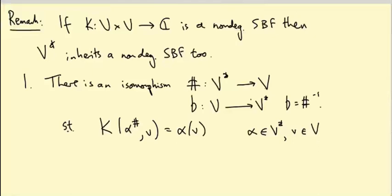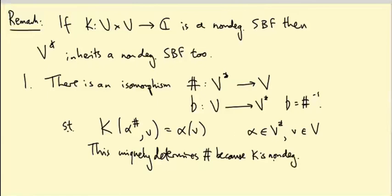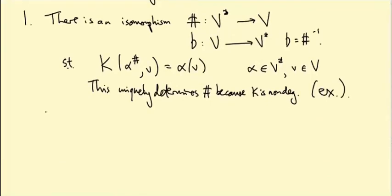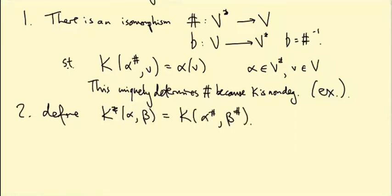Why does this uniquely determine the sharp map? This uniquely determines sharp because K is non-degenerate. So it's going to be an exercise to see that this is true. So in general, if you have a non-degenerate pairing, this will give you an isomorphism. So this will be an exercise. So now we define K star of alpha beta. So this is going to be a symmetric bilinear form on the dual space. We define this to be K(α sharp, β sharp). So that will be our dual symmetric bilinear form.